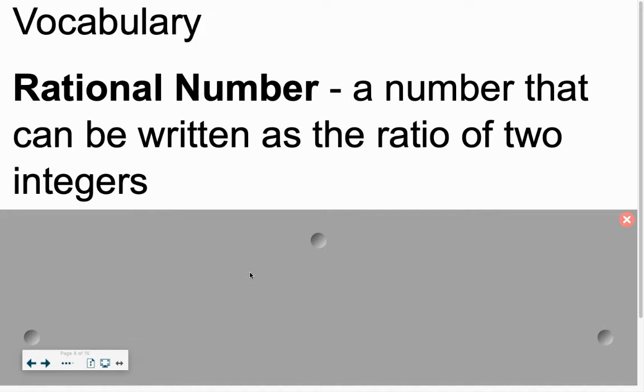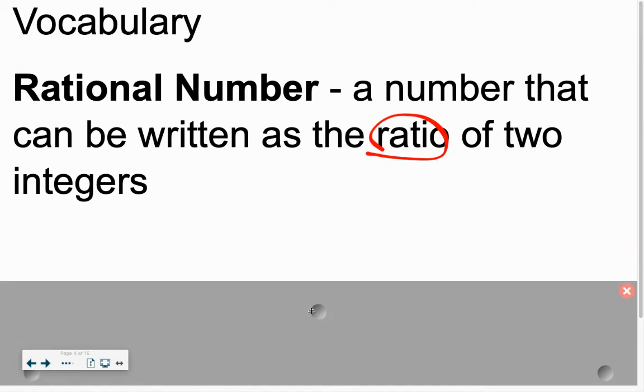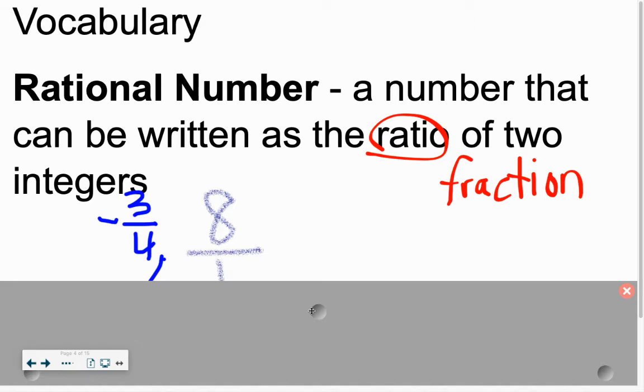So to start with, we're going to talk about a rational number. That's what this whole chapter is about. It's a number that can be written as the ratio of two integers. Circle that word ratio, and write down the reminder that ratio means it can be written as a fraction. Rational numbers can be anything like a fraction, positive or negative, like negative three-fourths. It can also be a number like 8, because 8 as a fraction is 8 over 1. That's why 8 works, because it can be written as a fraction, as a ratio.